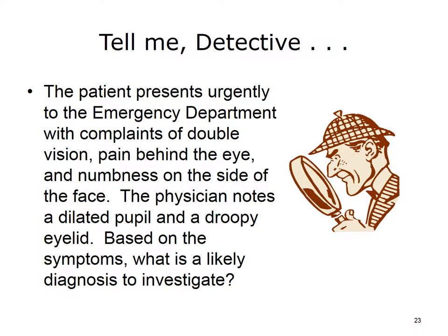Use your detective skills to study the case described on the slide and see if you can come up with a diagnosis. Did you guess an aneurysm? A brain aneurysm is an abnormal bulge or ballooning in the wall of an artery in the brain. They are sometimes called berry aneurysms because they are often the size of a small berry. Most brain aneurysms produce no symptoms until they become large, begin to leak blood, or rupture. The symptoms associated with an aneurysm can include droopy eyelid, double vision or other vision changes, pain above or behind the eye, a dilated pupil, and numbness or weakness on one side of the face or body.